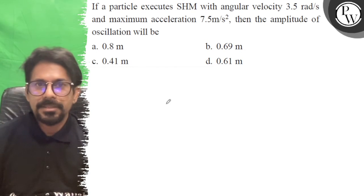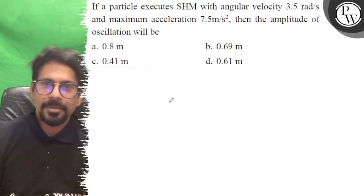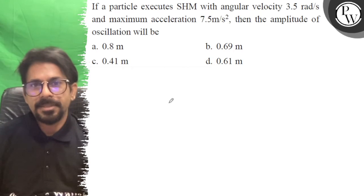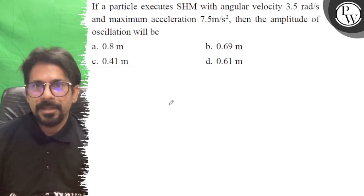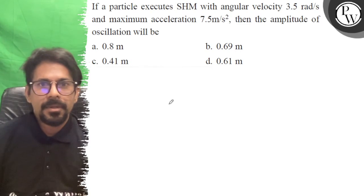Hello everyone, let's see the question. A particle executes simple harmonic motion with angular velocity 3.5 radians per second and maximum acceleration 7.5 m/s². Then the amplitude of oscillation is?